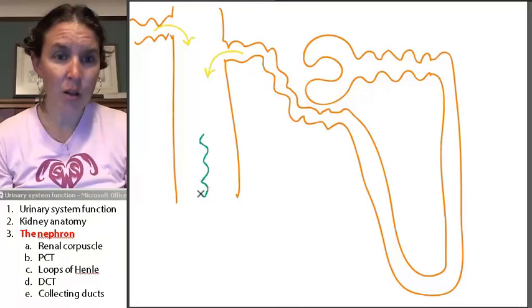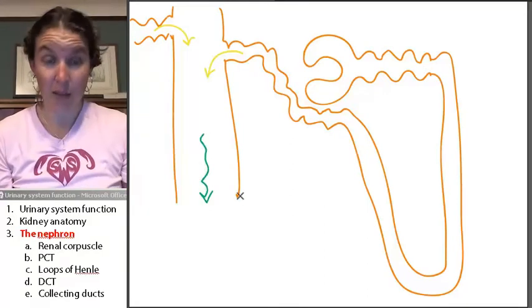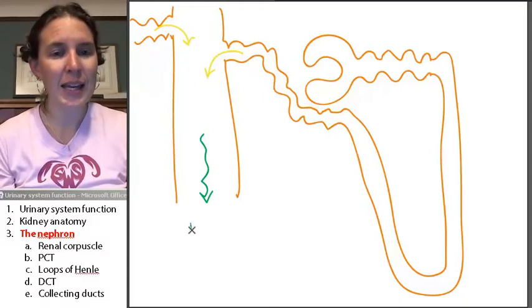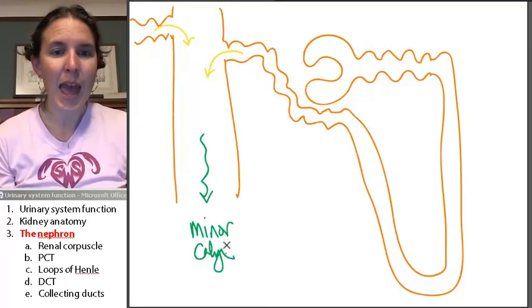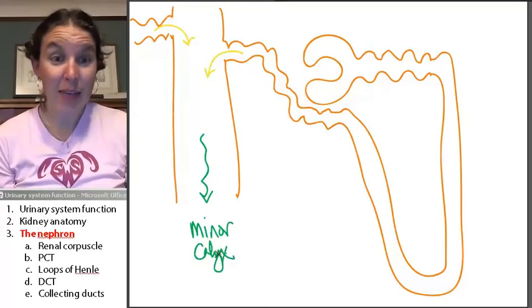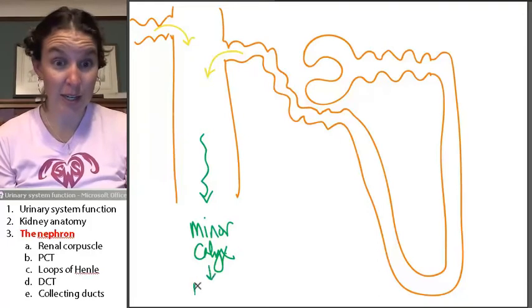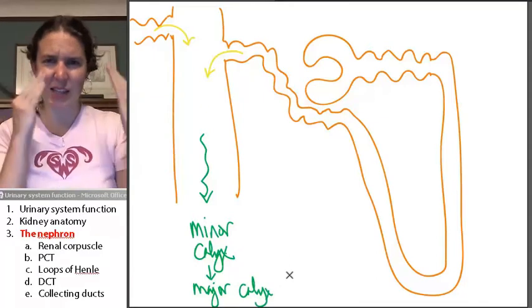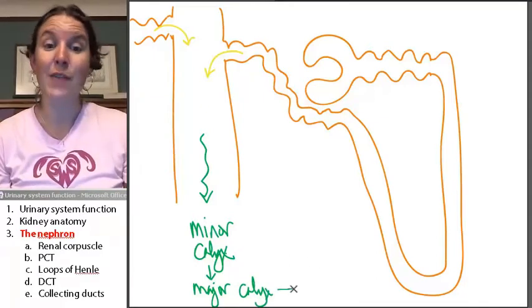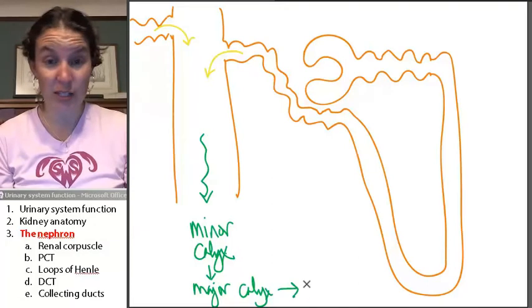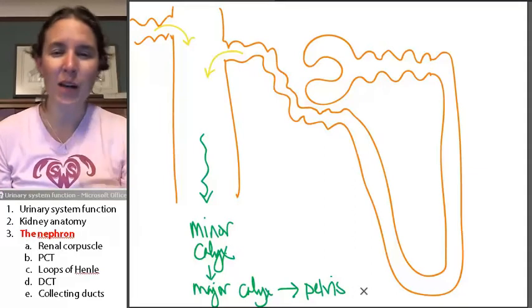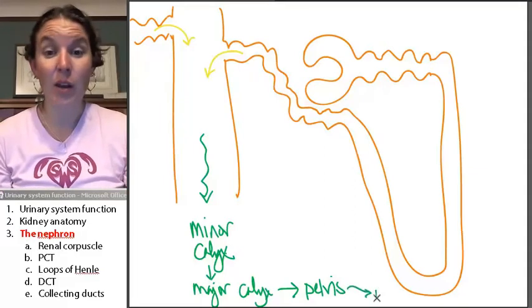Well, guess what? All your pre-pee that's being dumped into this structure, which I'm going to name all these for you, they're actually heading to the minor calyx. And from the minor calyx, they're going to head to a major calyx. Right? That works for you based on the previous section. And from the major calyx, we're just going to dump it to the pelvis, the renal pelvis. And from the renal pelvis, where are we going to go? Into the ureter.